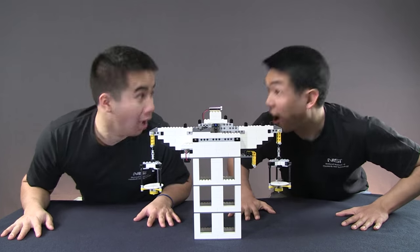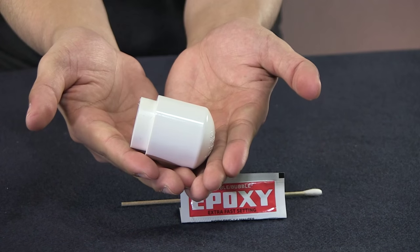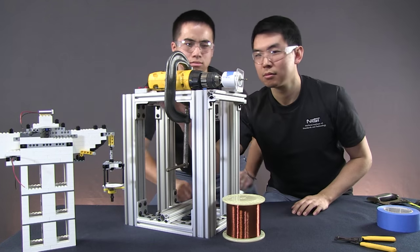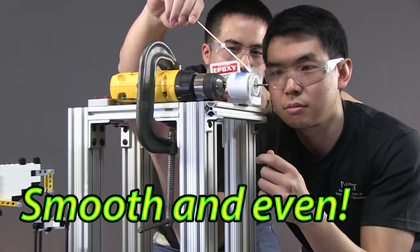But wait, there's more! Why settle for store-bought electromagnets when you can build your own? To make them, simply wrap two lengths of insulated wire around two pieces of PVC piping. You can even use a power drill to speed things up and ensure your coils are smooth and even. Smooth and even.